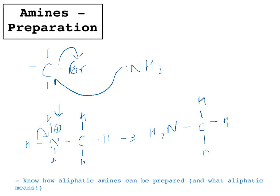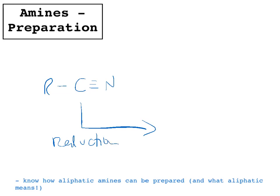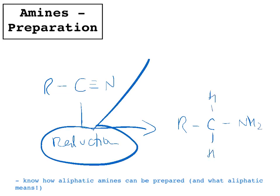Another way of creating an aliphatic amine is to use a nitrile group. You may have already made a nitrile compound, and then you reduce it to create your amine. For reduction, you should know the four different reductions. You can use lithium aluminium hydride (LiAlH4), or you can use hydrogen with a nickel catalyst. Either of those will reduce your nitrile group to an amine group.